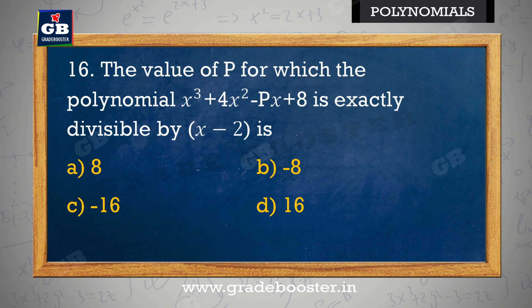The value of p for which the polynomial x³ + 4x² − px + 8 is exactly divisible by (x − 2) is: p ka value jiske liye polynomial x³ + 4x² − px + 8 bilkul (x − 2) se divisible hai — a) 8, b) −8, c) −16, d) 16.